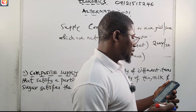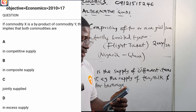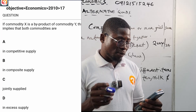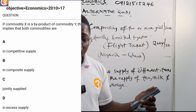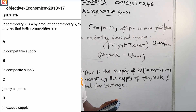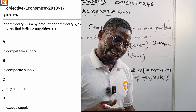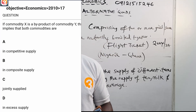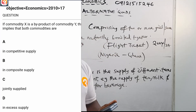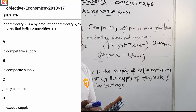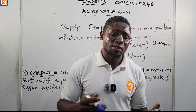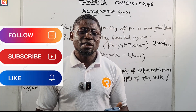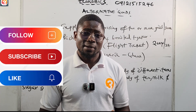2010, number 17: 'If commodity X is a byproduct of commodity Y, this implies that both commodities are...' Obviously they are jointly supplied. X is a byproduct — you have a principal supply and you're getting a byproduct from it, like getting hides, beef, and milk from cows. Those are all byproducts from one principal supply. So the answer is joint supply. There are many more questions on the application — download it, activate it, and start practicing your way to success. See you in the next one.